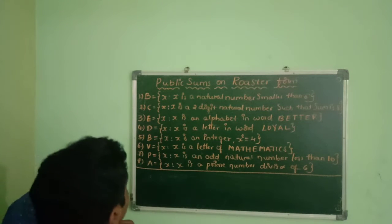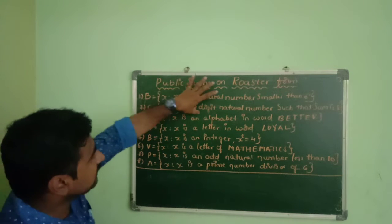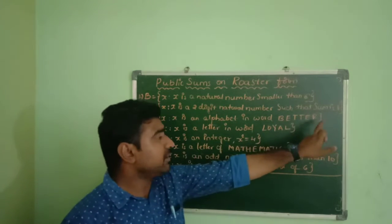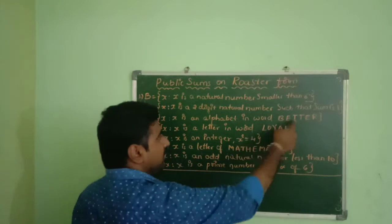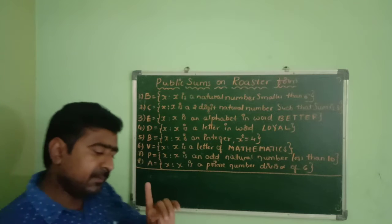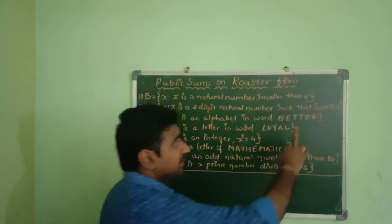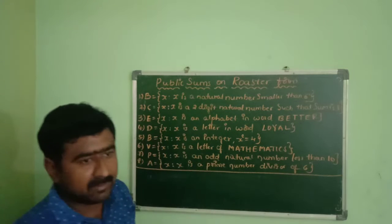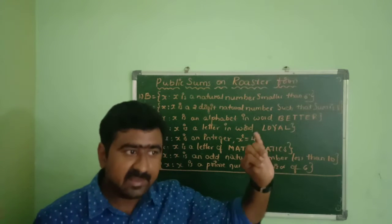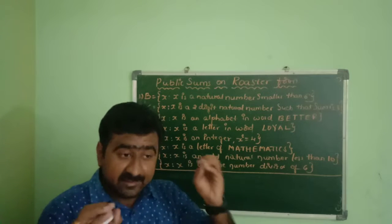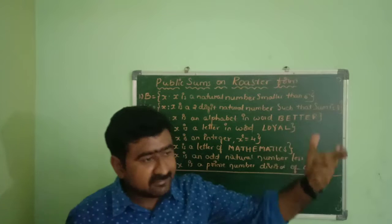Third sum: Set N where x is an alphabet in the word BETTER. The word BETTER has the spelling B, E, T, T, E, R — a total of six letters. In a roster form, elements are not repeated. So we do not repeat T and E.